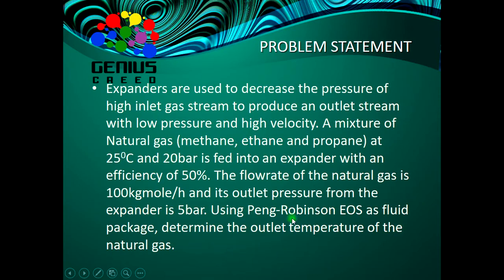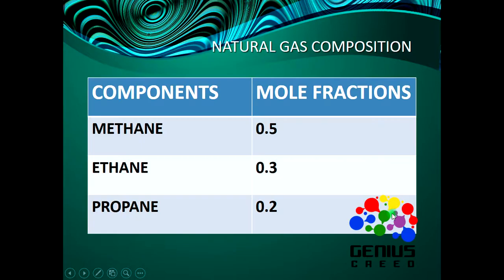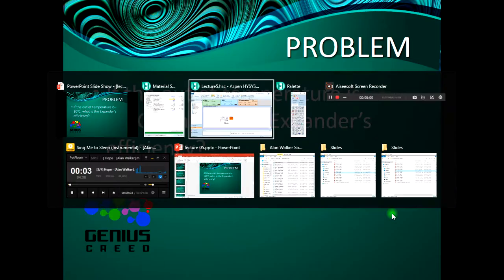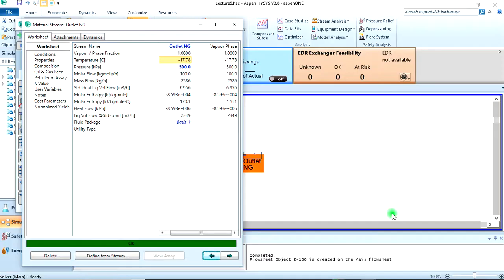We used the Peng-Robinson equation of state as the fluid package and determined the outlet temperature of the natural gas to be minus 17 degrees Celsius. Now the second problem: if the outlet temperature is minus 30 degrees Celsius, what is the expander's efficiency? Let's go back to our simulation environment.